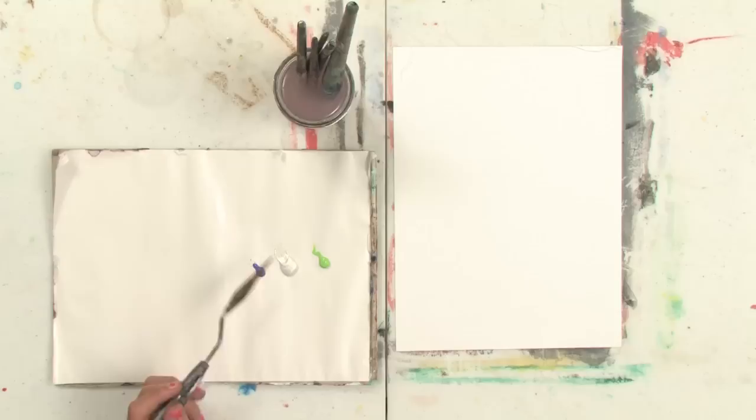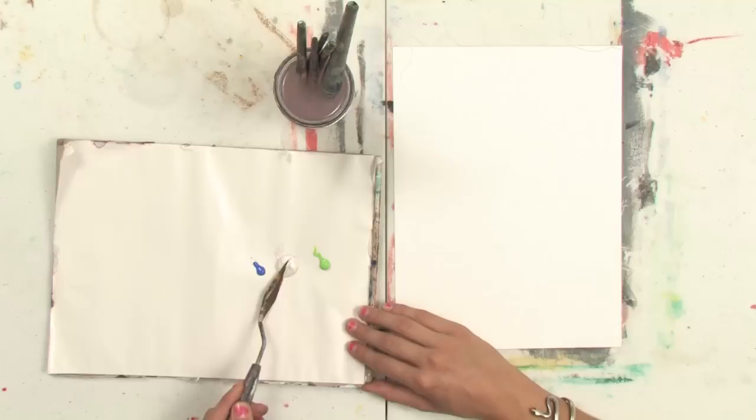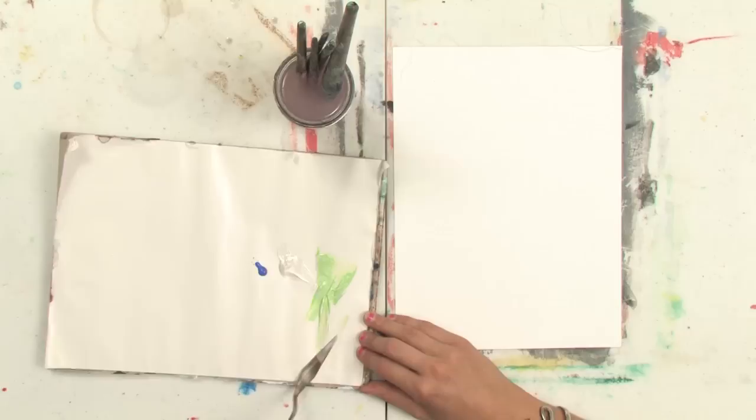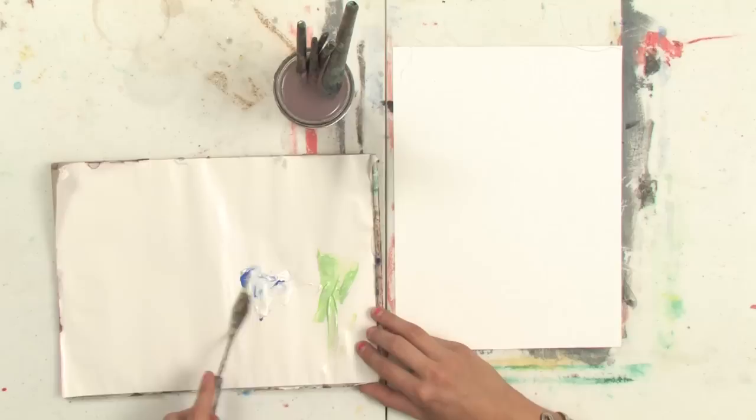And I have this white metallic paint here, and I'm going to split this in half and mix half of it with green, and the other half with blue.